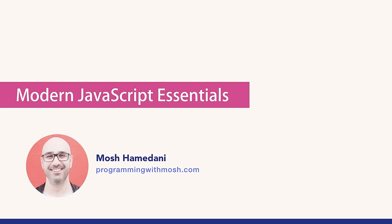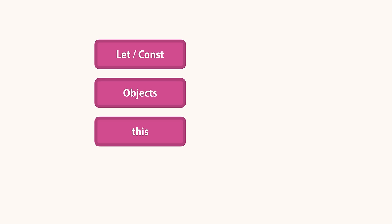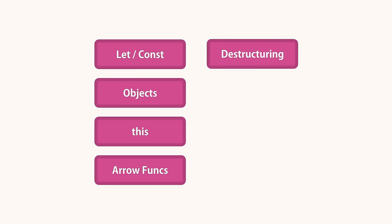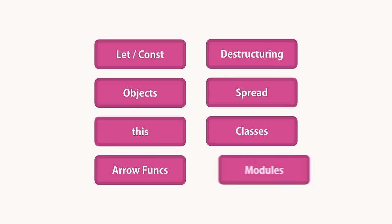In order to build applications with React you should have at least three months of experience programming in JavaScript. In this section I'm going to cover the essential JavaScript features that you're going to use a lot in React applications, such as let versus const keywords, objects, the this keyword and how it behaves differently, arrow functions, object destructuring, the spread operator, classes and modules. Make sure you know all these topics well before going further, otherwise you're going to have a lot of difficulty later down the road.